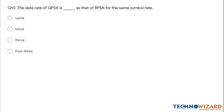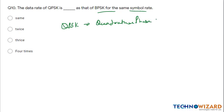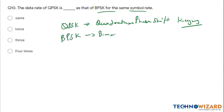Question 10: The data rate of QPSK (Quadrature Phase Shift Keying) is twice that of BPSK (Binary Phase Shift Keying) for the same symbol rate.